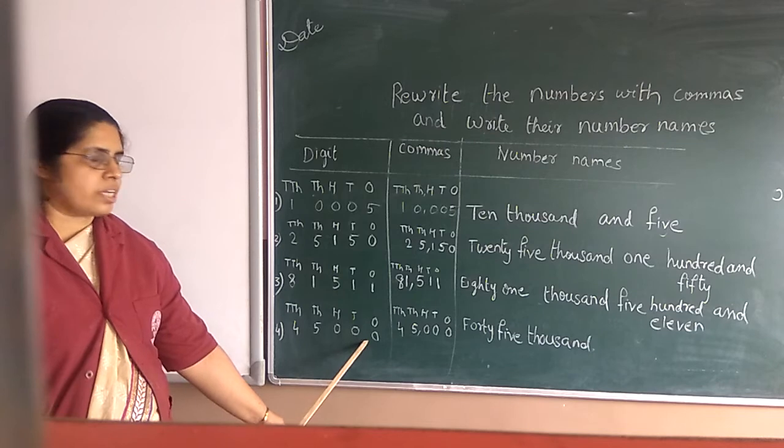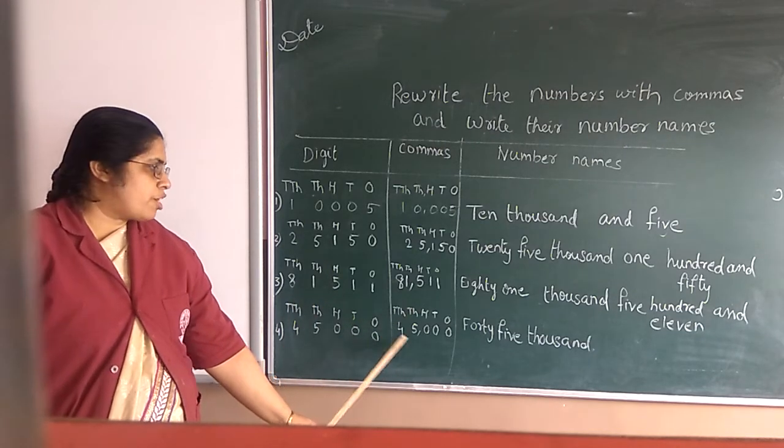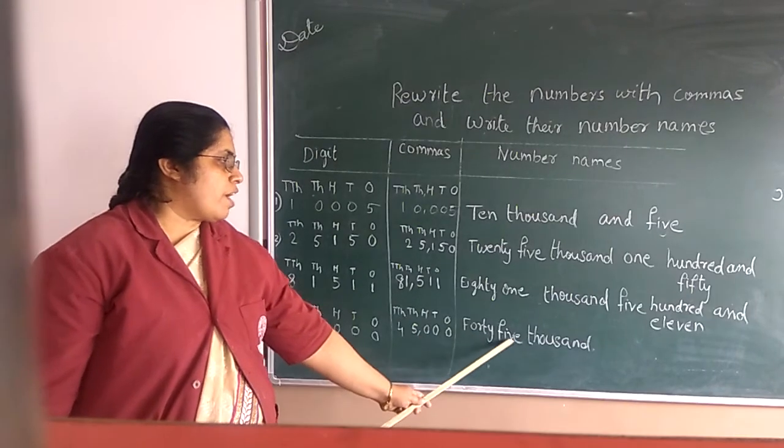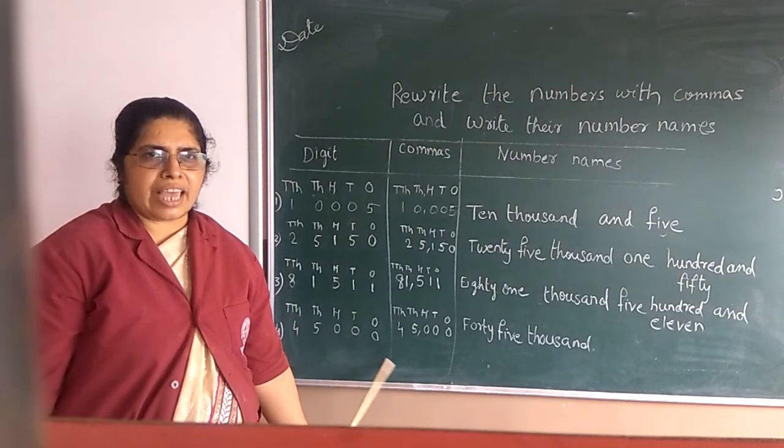45,000. And where you will put the comma? After 45. 45,000. So write in words. Number name. 45,000. Hope you understood all. All the best students. Thank you.